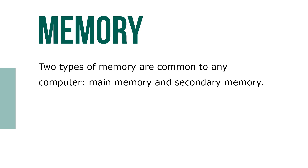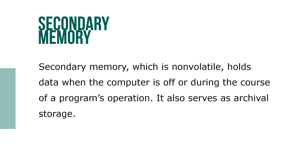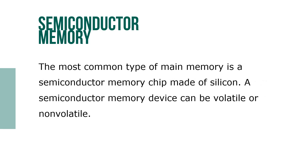Two types of memory are common in any computer: main memory and secondary memory. Secondary memory, which is non-volatile, holds data when a computer is off or during the course of a program's operation. It also serves as archival storage.